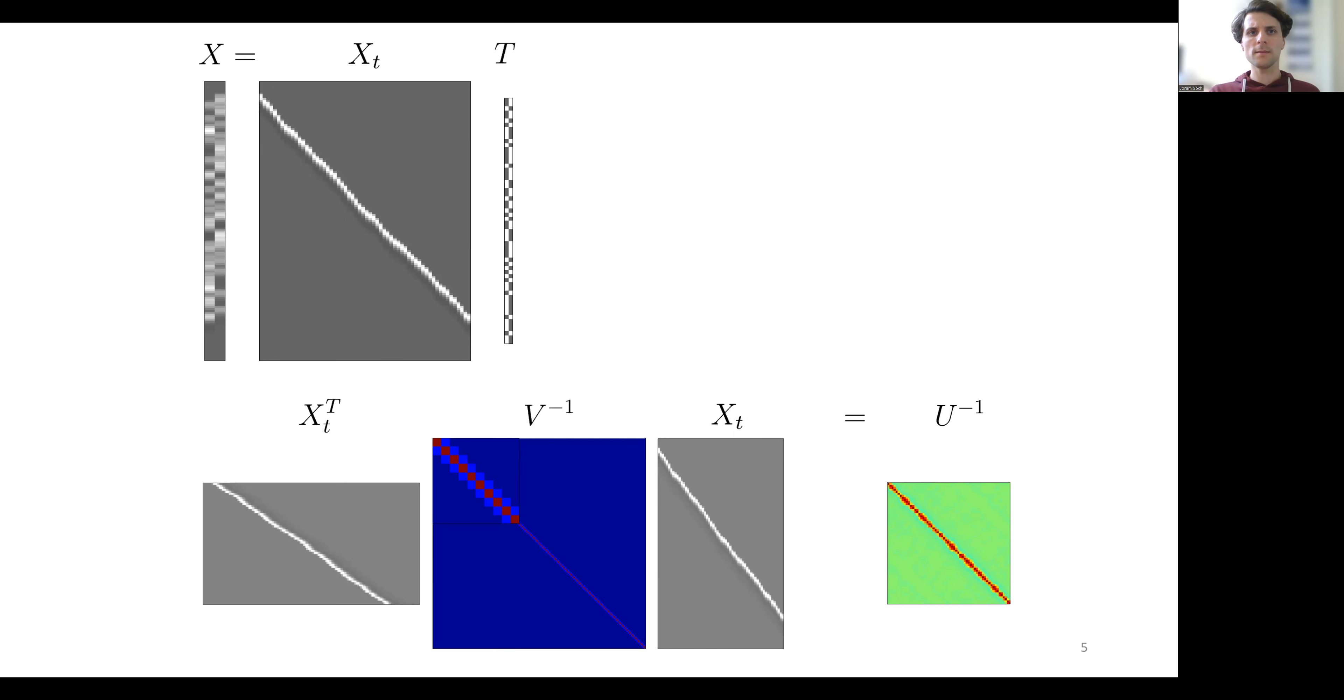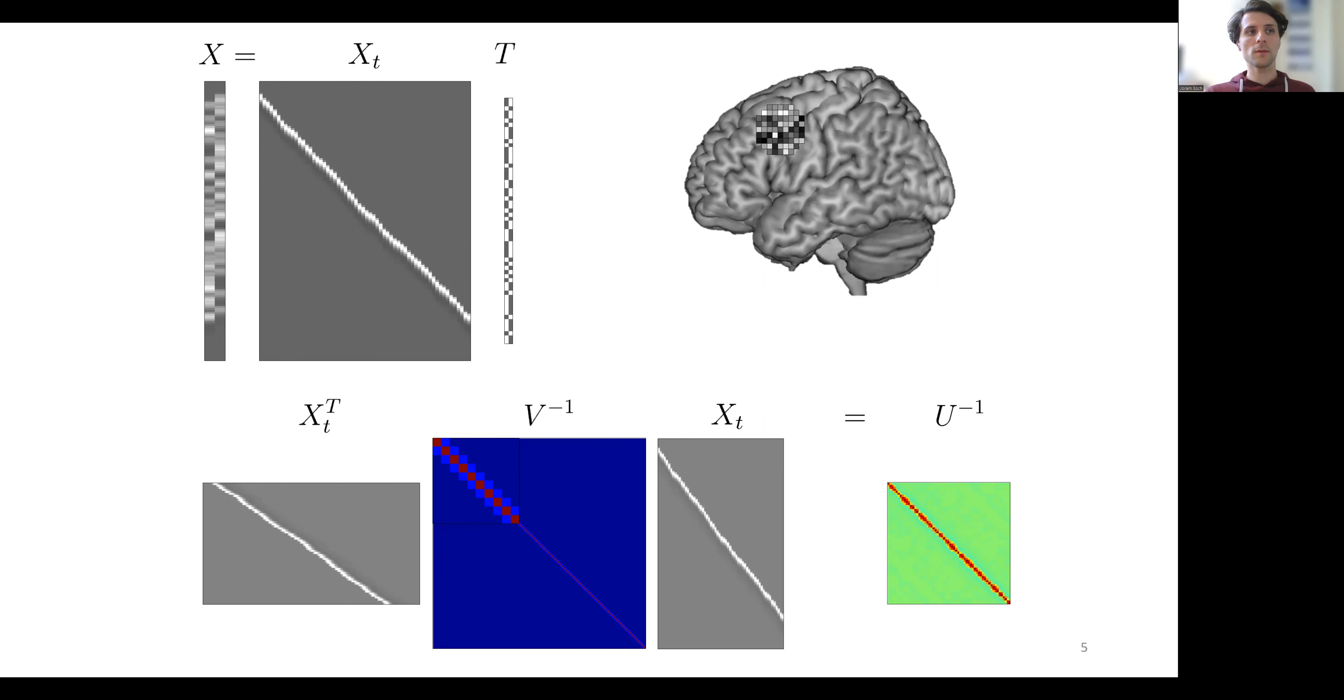In searchlight analysis, instead of decoding from all voxels within a predefined region of interest, we create searchlights, that is, spherical volumes containing all voxels around a center voxel which is then moving through all the voxels in the brain.